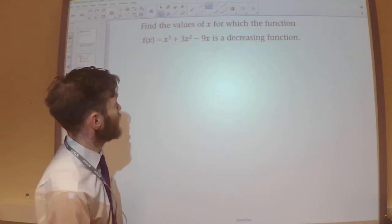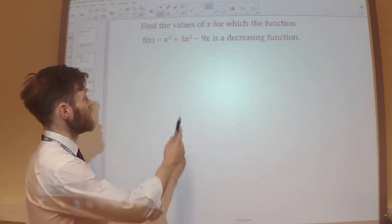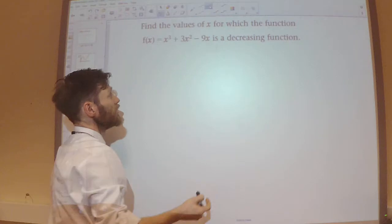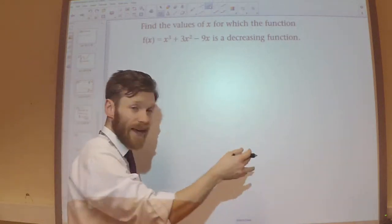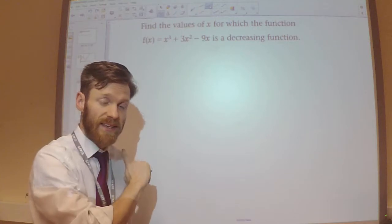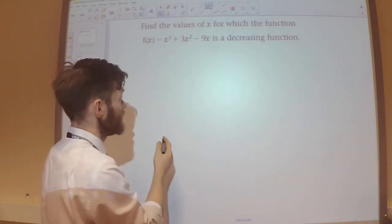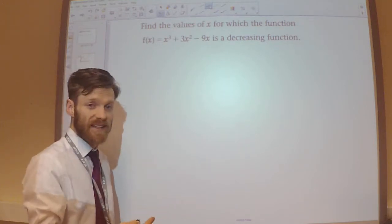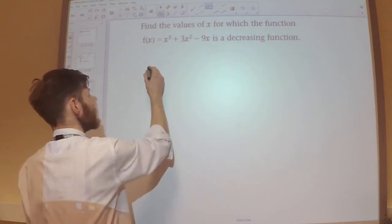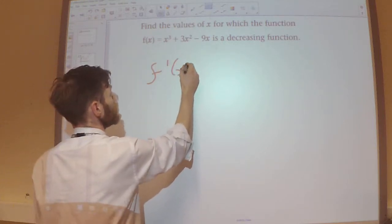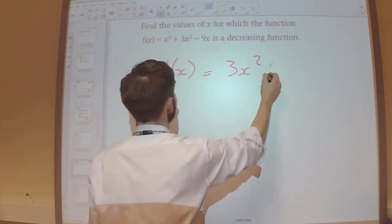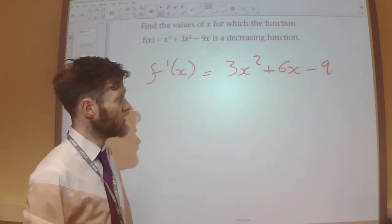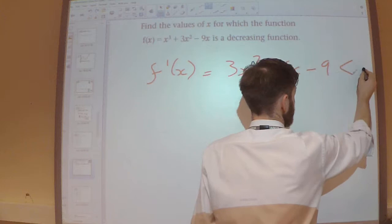Second example: we want to find the values of x for which the function x cubed plus 3x squared minus 9x is a decreasing function. It's not always a decreasing function — I just need to find the values of x when it is decreasing. So when is the gradient less than 0? Let's differentiate this. We'll get that — so this is our gradient function. And when is that going to be less than 0?